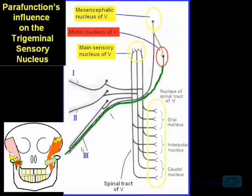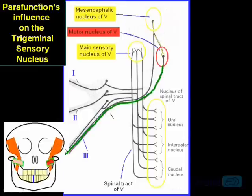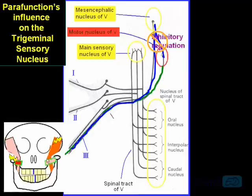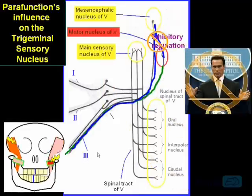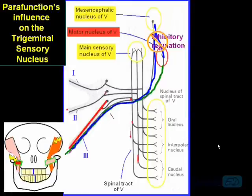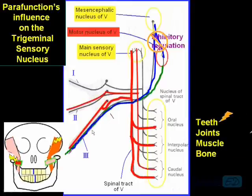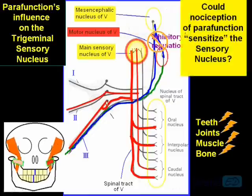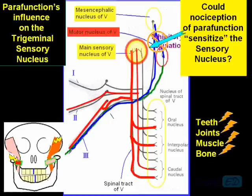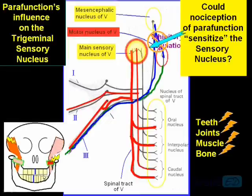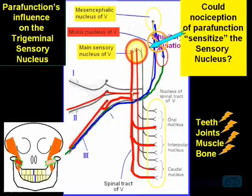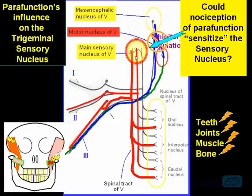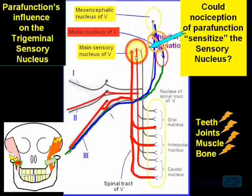Normally the motor route elicits an opening and closing because there's a reflexive activity through the mesencephalic nucleus, but for some reason there's no inhibition — the motor division runs out of control during certain sleep stages. At some point we start to get noxious input through the third and second division that bombards the sensory nucleus. Could the nociception of parafunction — teeth being compacted, joints being strained, muscles burning, bone being crushed — could those be bombardments of nociception to the trigeminal sensory nucleus so that later during the day it perceives normal input improperly, doesn't modulate correctly, and makes improper reflexive decisions?